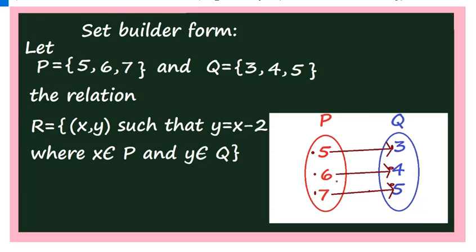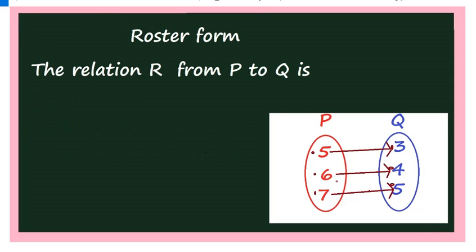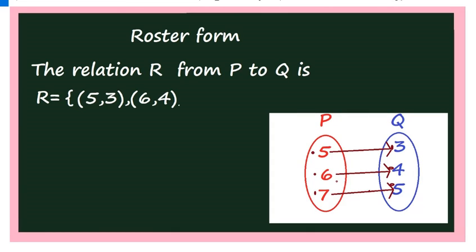Writing the roster form is very simple. You can observe the 3 elements and write them directly. The roster form is: R from P to Q equals {(5, 3), (6, 4), (7, 5)}. This is the roster form of the representation of the given relation.